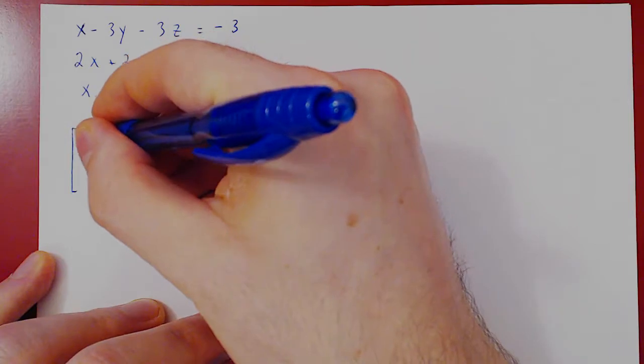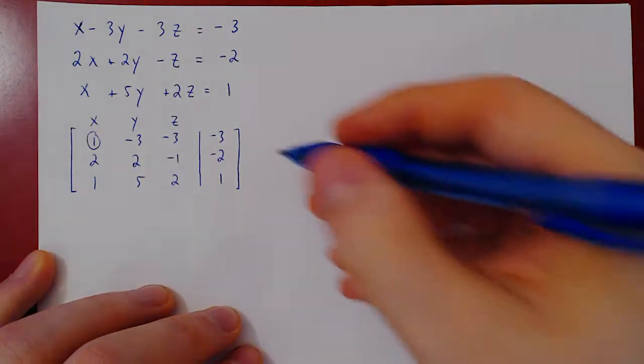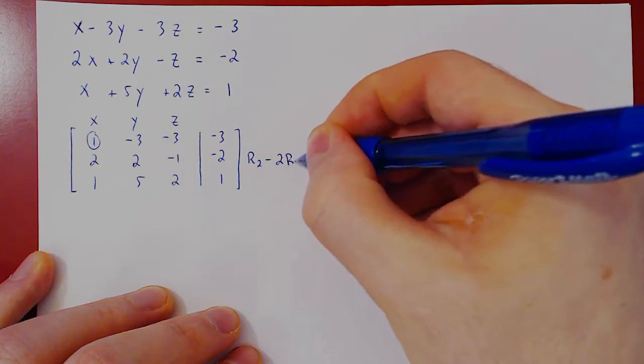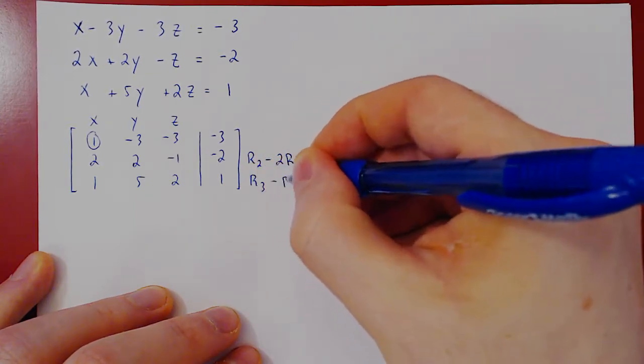We already have a leading one in the leftmost column top row, so we can kill the entries below it. So we do row 2 minus 2 row 1, and row 3 minus row 1.